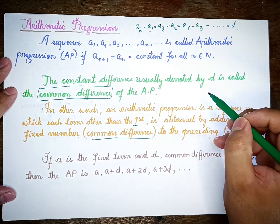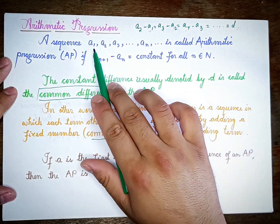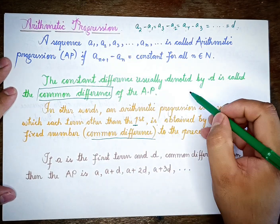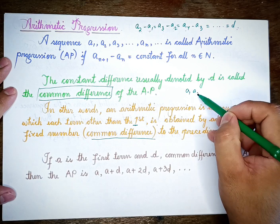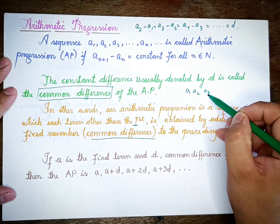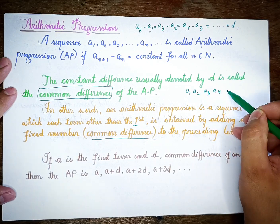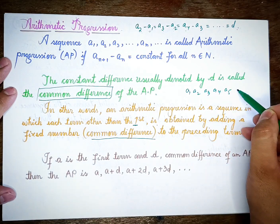In this case, the first term is a1, then a2, a3, a4, a5.